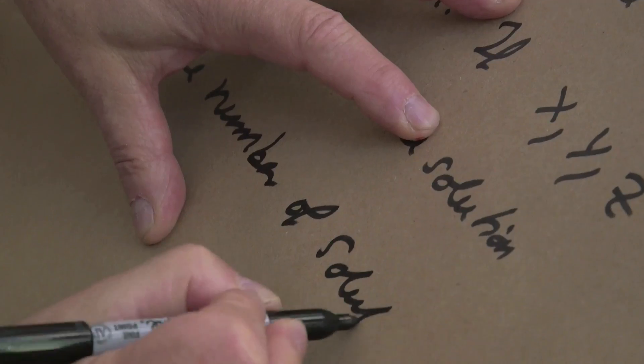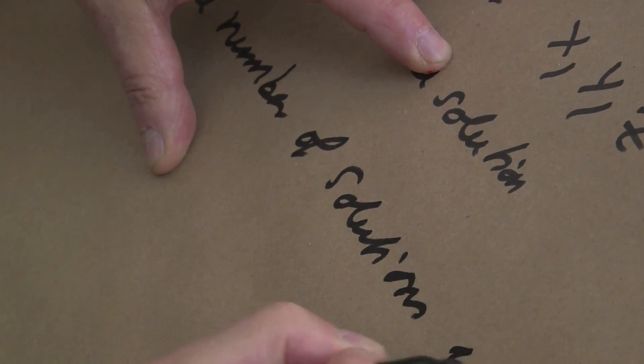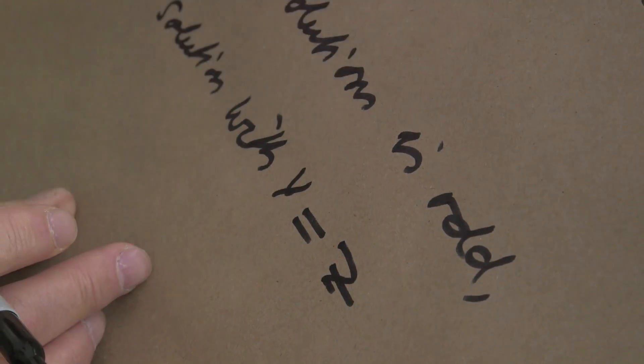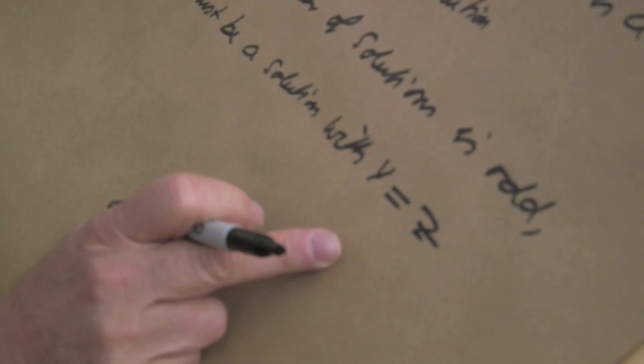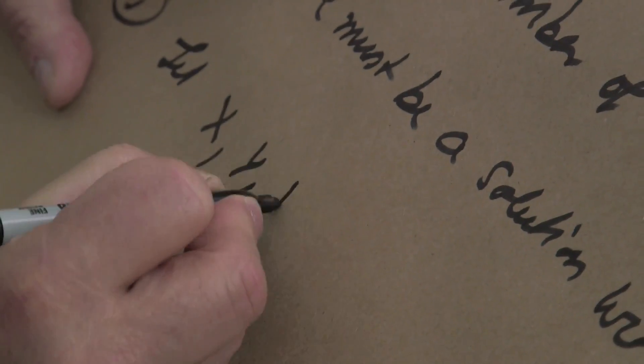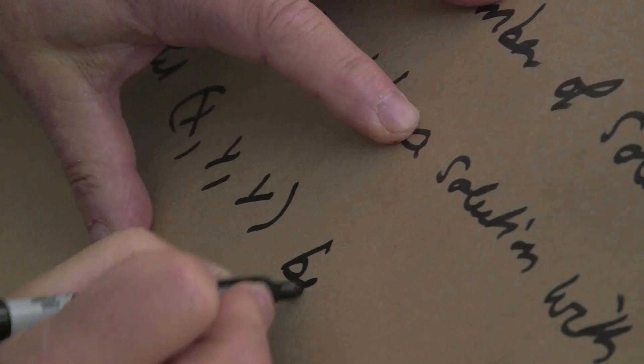But we know from step 2, this important step, that the number of solutions is odd. Since the number of solutions is odd, there must be a solution where y is equal to z. Otherwise we would get an even number of solutions. And now we are finished. We take this solution and put it into the equation. So let x, y, y be a solution.